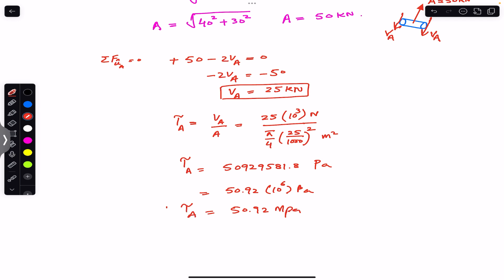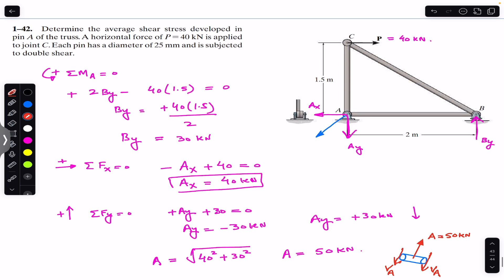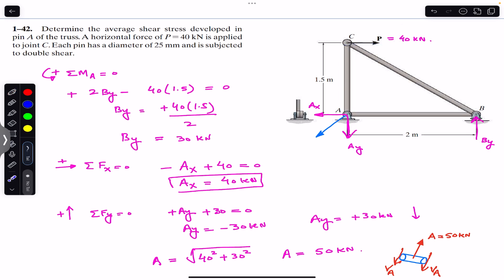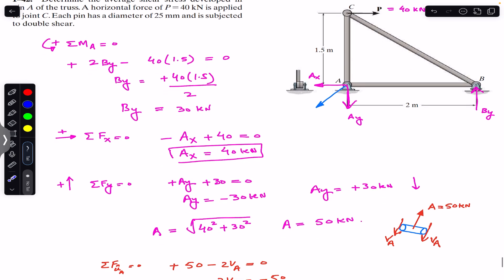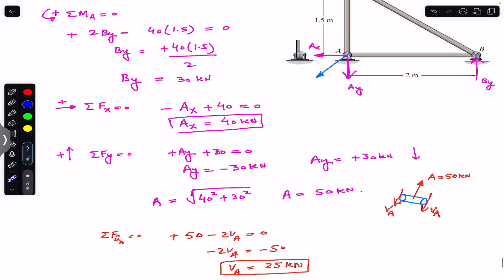The average shear stress developed in pin A on the cross-sections is 50.92 MPa, due to the horizontal force P of 40 kN. I hope this helps in your learning. Do subscribe to Engineers Academy for solutions to more problems from Mechanics of Materials by R.C. Hibbeler.